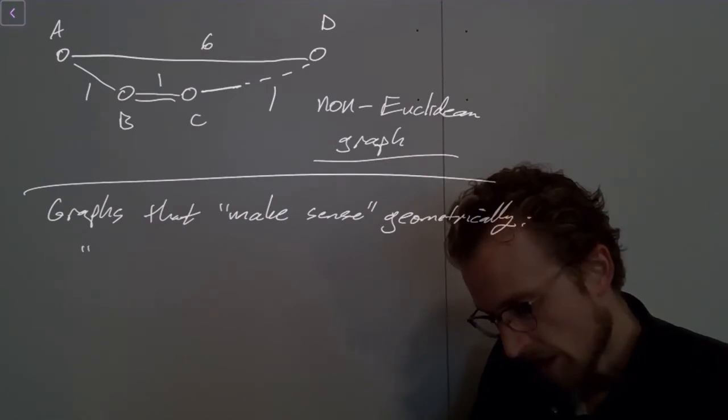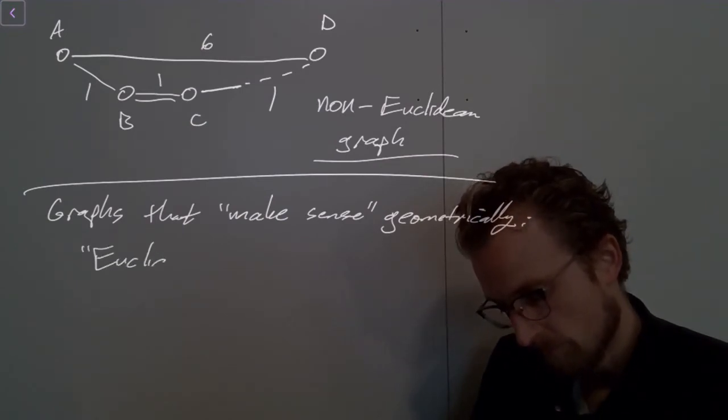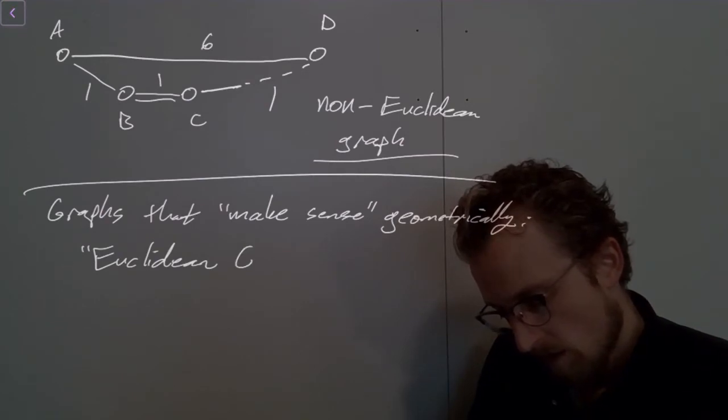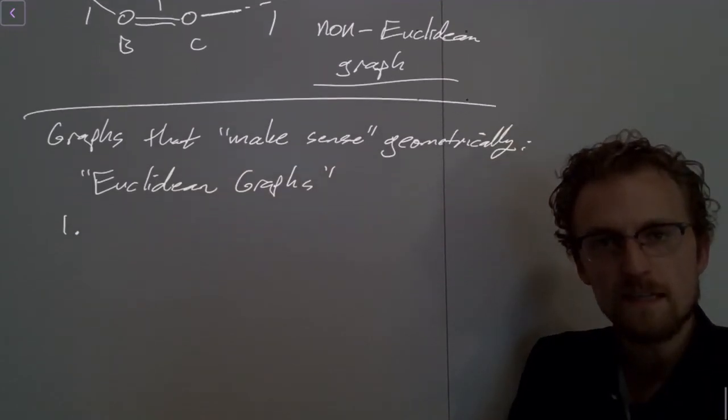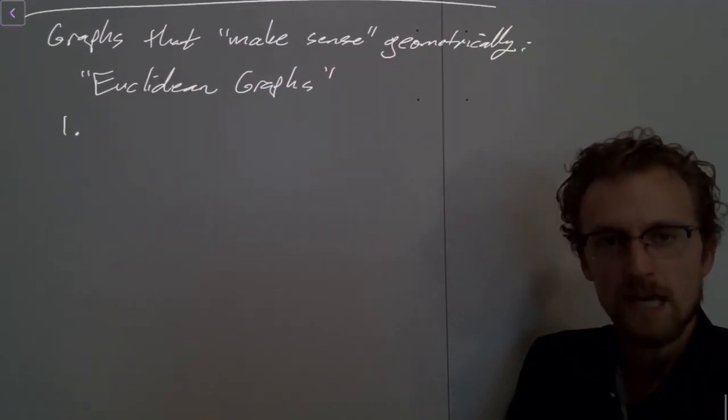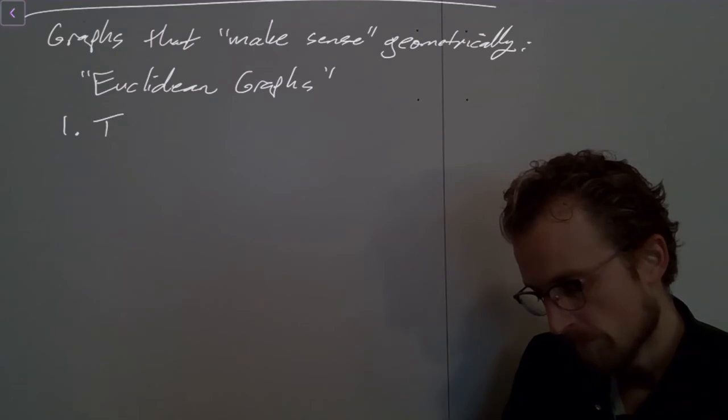And we'll call these Euclidean graphs. So Euclidean graphs satisfy two properties. So the first property is their distances, or the edge weights, satisfy the triangle inequality.